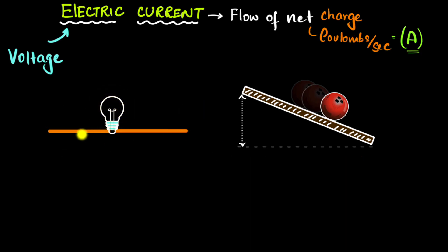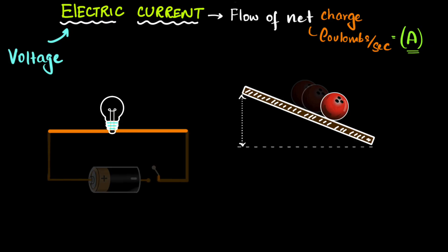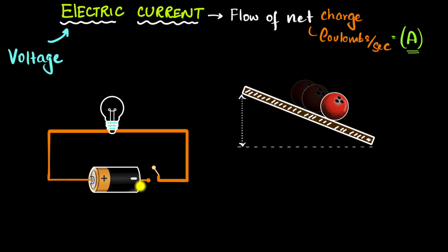But how do you get a voltage in the first place? In small circuits, voltage is provided by a battery. One end of the battery is at a higher potential, the other at a lower potential, and when you connect it to a circuit, it provides the potential difference. In larger circuits, like the circuits in our houses, the potential difference is provided by large electric generators in our power stations.